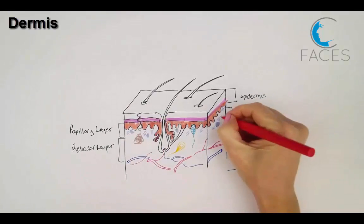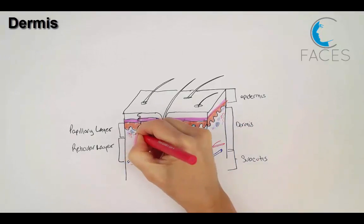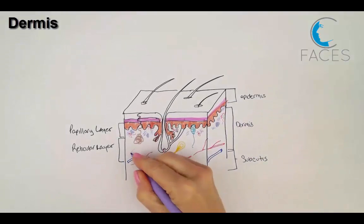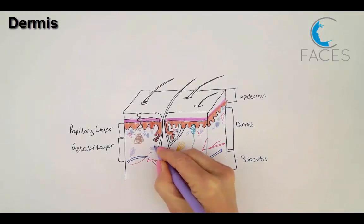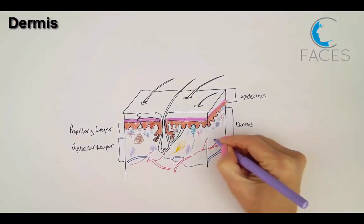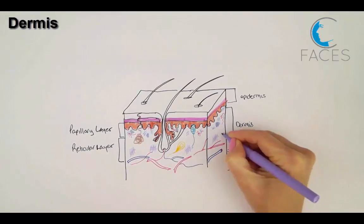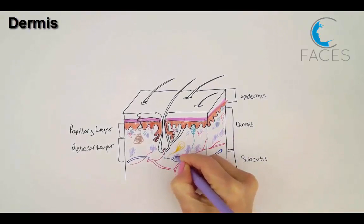The reticular layer below is much thicker, with dense irregular connective tissue, which are mainly bundles of type 1 collagen. This layer has a lot more fibers and fewer cells than the papillary layer, but both layers contain a rich network of blood and lymphatic vessels.